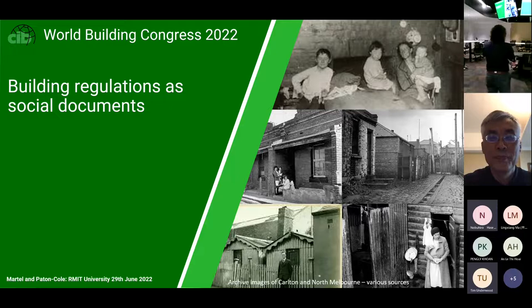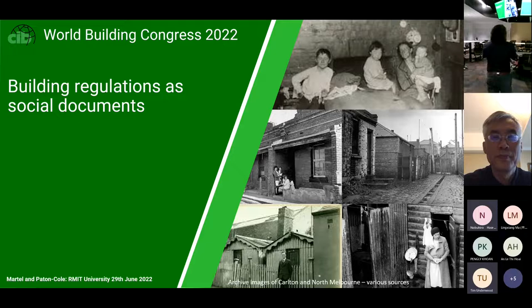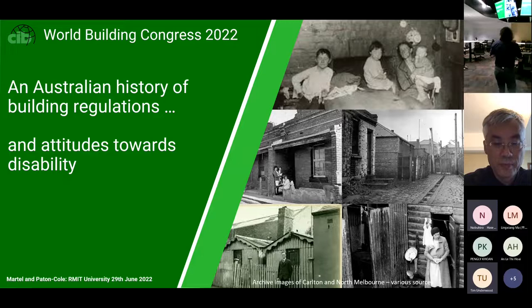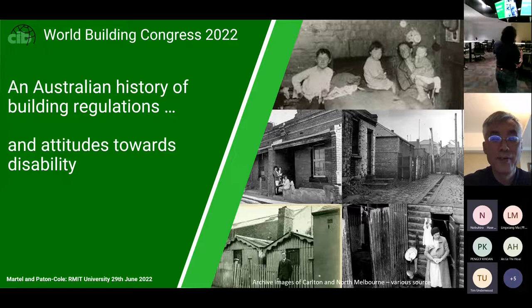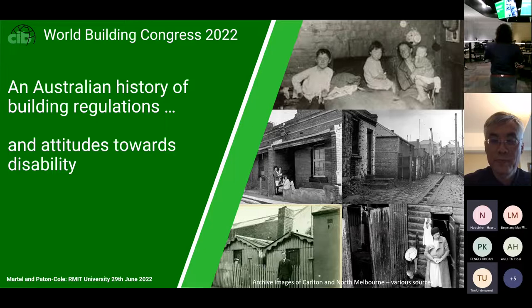Those photos on the right are images of Melbourne from the 1800s — inner Melbourne, basically where we are here at RMIT. You can see the social conditions that people lived in. What we're going to do is walk through a history of Australian building regulations and a history of community attitudes towards people with disability in Australia, and map how surprisingly intertwined those two things are.